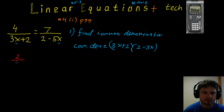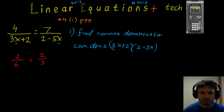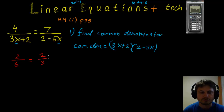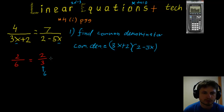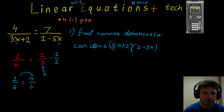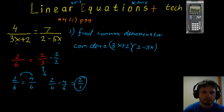For example, take 2/6 and 2/3. Right now we can't do much, but once we find a common denominator — which is 6 — we can use addition or subtraction. To convert 2/3, multiply numerator and denominator by 2 to get 4/6. Then 2/6 minus 4/6 gives us −2/6, which is your final answer for that example.